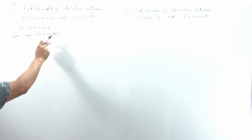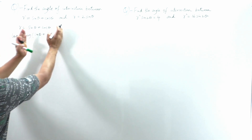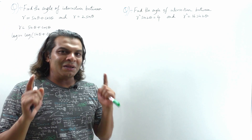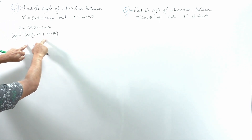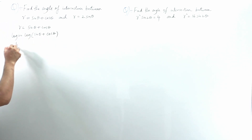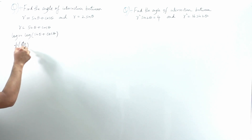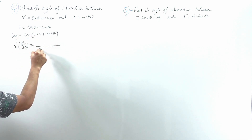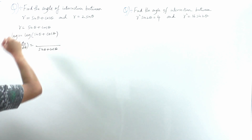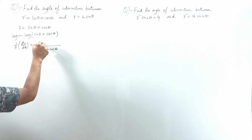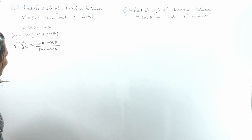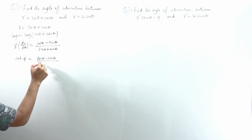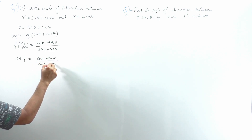We differentiate both sides. Note that the whole bracket is a single function — log(a·b) = log a + log b, so don't mess with the formulas. log r = log(sinθ + cosθ). Differentiating: 1/r · dr/dθ = 1/(sinθ + cosθ) · (cosθ − sinθ), by the chain rule. We rewrite this as cot φ = (cosθ − sinθ)/(cosθ + sinθ).